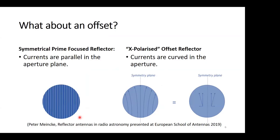But if you have an X-polarized offset single reflector, then this will cause a curve in the current, as you can see here.